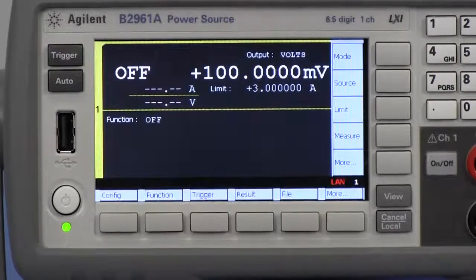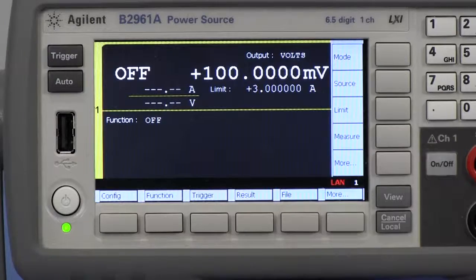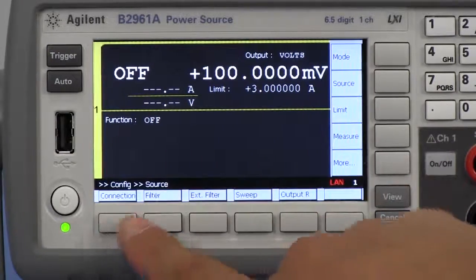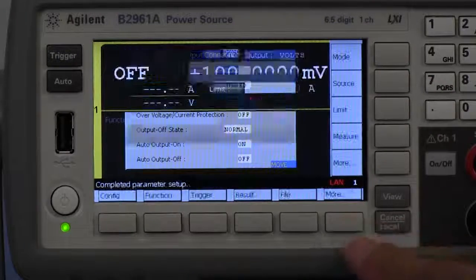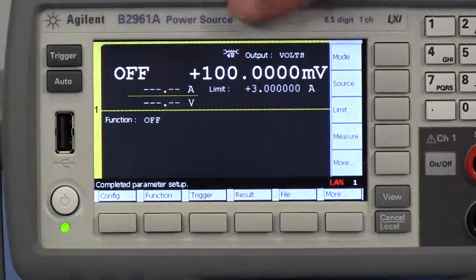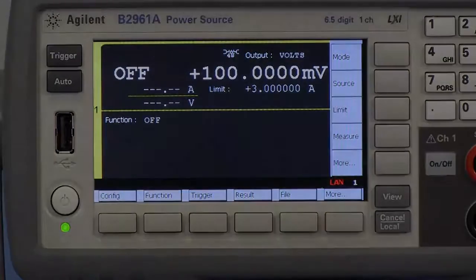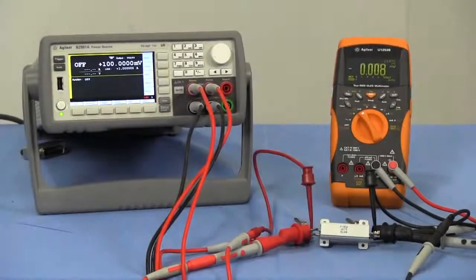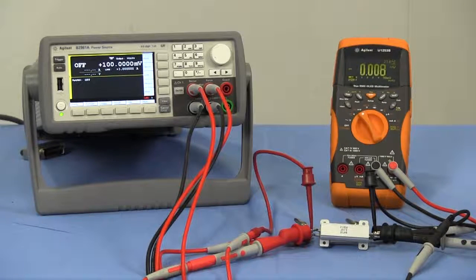Next, I'll apply the voltage with remote sensing. We need to set sensing type to 4-wire to use the remote sensing. This symbol indicates remote sensing is enabled. I've connected the sense terminals to the DUT. I'll apply the voltage.